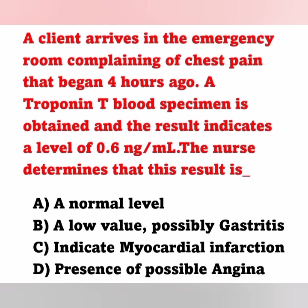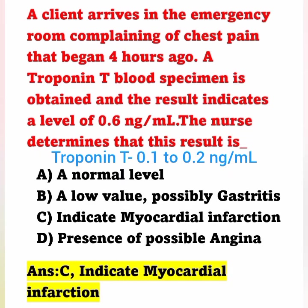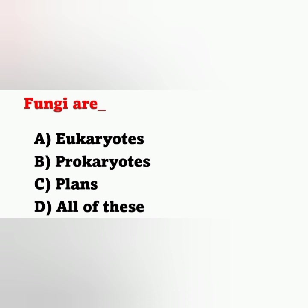Increased amounts of troponin are released when there is damage to the myocardium. The normal value of troponin is 0.1 to 0.2 nanograms per mL. Any value above 0.2 nanograms per mL indicates myocardial infarction. Here, the value is 0.6 nanograms per mL, which indicates the patient is having an MI. Option C is the correct answer.